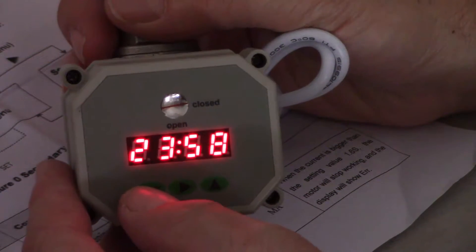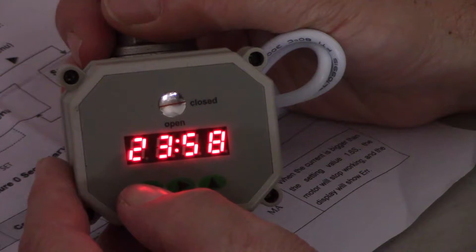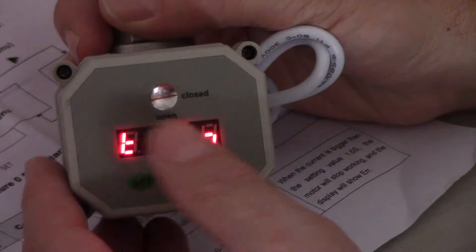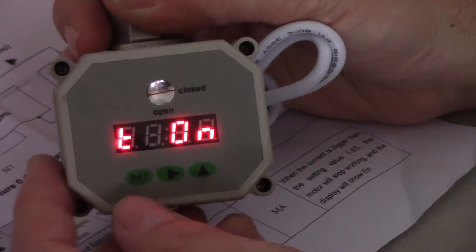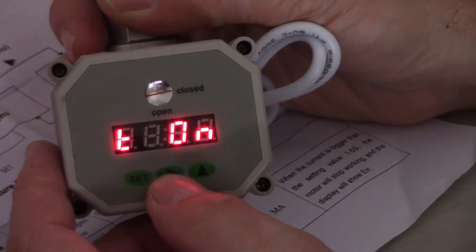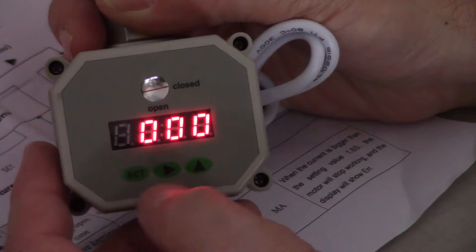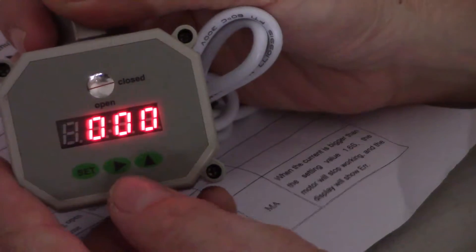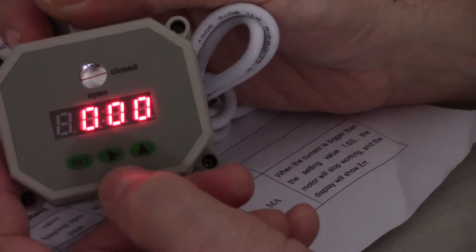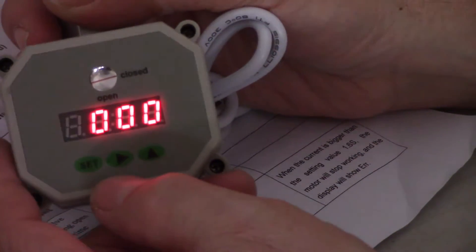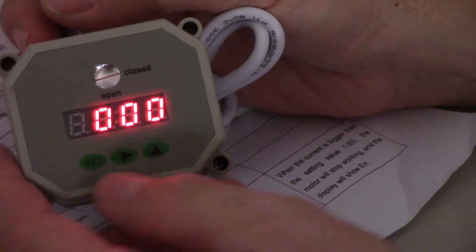You're going to press and hold the set button for a couple of seconds. The screen's going to change to lowercase t and the word on. We're going to press the right arrow, and what we're doing first is setting how long it's going to be on or open for.